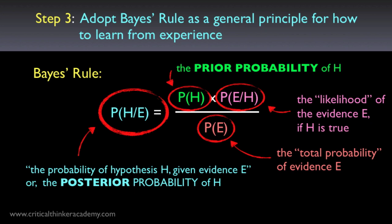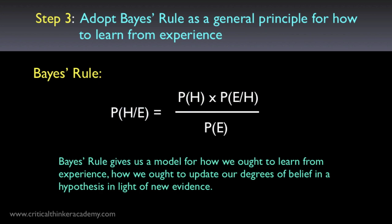I'm not going to spend more time on how this calculation goes here, since I've got a whole other course on the rules of probability theory that explains these kinds of calculations in more detail. The point I want to make is that when you interpret probabilities the way subjectivists do, Bayes' rule gives us a model for how we ought to learn from experience — how we ought to update our degrees of belief in a hypothesis in light of new evidence. Bayes' rule has lots of important applications in statistical inference theory, but in the hands of subjectivists it also functions as the central principle of a theory of rational belief formation and rational inference. This is why subjectivists are often called Bayesians — within this interpretation, Bayes' rule takes on great importance as part of a general theory of rationality.